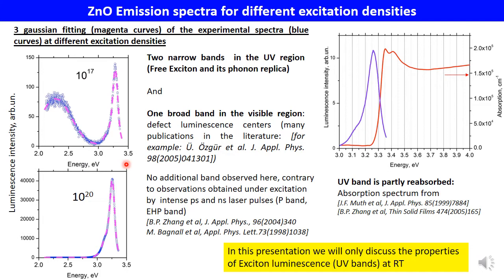Here are two examples of measured emission spectra shown as blue curves for two excitation densities: 10^17 and 10^20 per centimeter cubed. A three-Gaussian fit can correctly reproduce all the spectra, shown by the magenta curves. The spectra are formed by two narrow UV bands — the free exciton and its phonon replica — and one broad band in the visible region. This visible band is due to defect luminescence centers from defect levels in the band gap, with many publications in the literature discussing this emission, for example the publication by Osgood and co-workers.